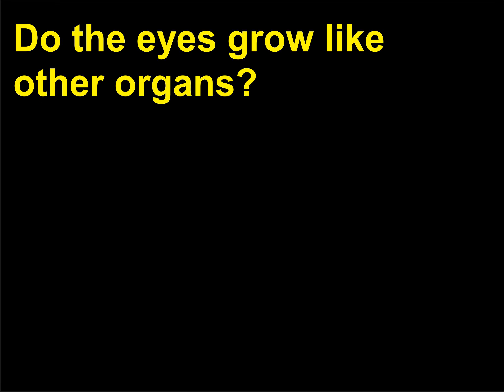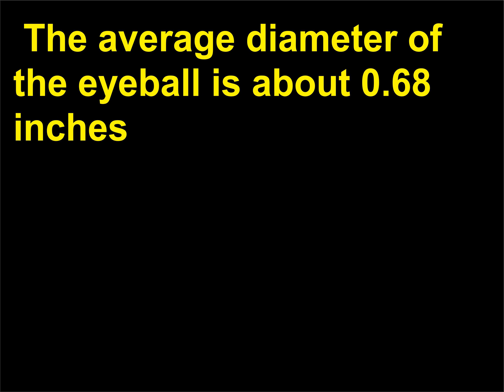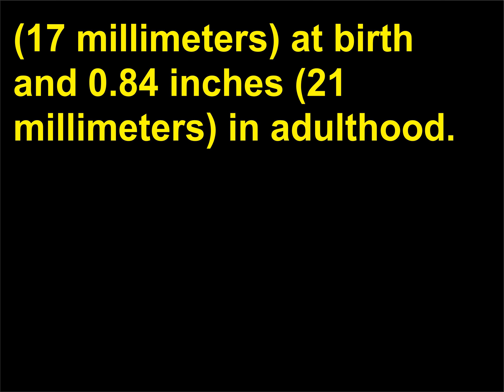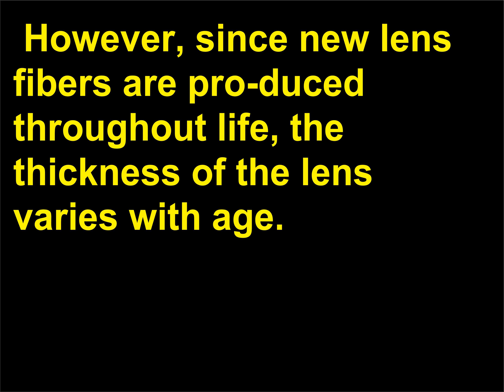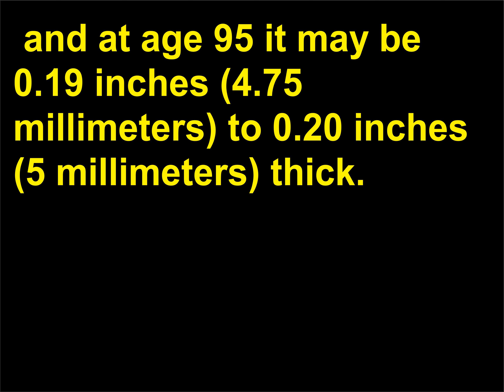Do the eyes grow like other organs? Unlike most other organs, the eyes do not grow very much from infancy to adulthood. The average diameter of the eyeball is about 0.68 inches (17mm) at birth and 0.84 inches (21mm) in adulthood. However, since new lens fibers are produced throughout life, the thickness of the lens varies with age. At birth the thickness measures from 0.14 inches (3.5mm) to 0.16 inches (4mm), and at age 95 it may be 0.19 inches (4.75mm) to 0.20 inches (5mm) thick.